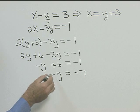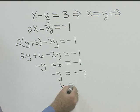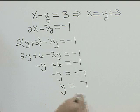We don't want negative y, we want to solve for positive y. So if we multiply through by negative one we get y equals seven. So we have the y value.